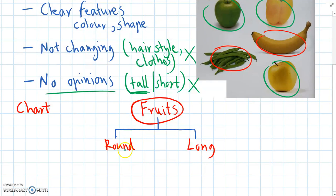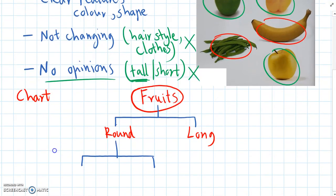So each of the round and the long groups, they both have more than one object in them still. So we need to think of another question and repeat the same process again. So out of our round objects, let's think of a question that can separate those round objects from each other. And I'm looking at the shape of the skin, and the capsicum has little lumps in the skin. So I'm going to say, lumpy skin or smooth skin.